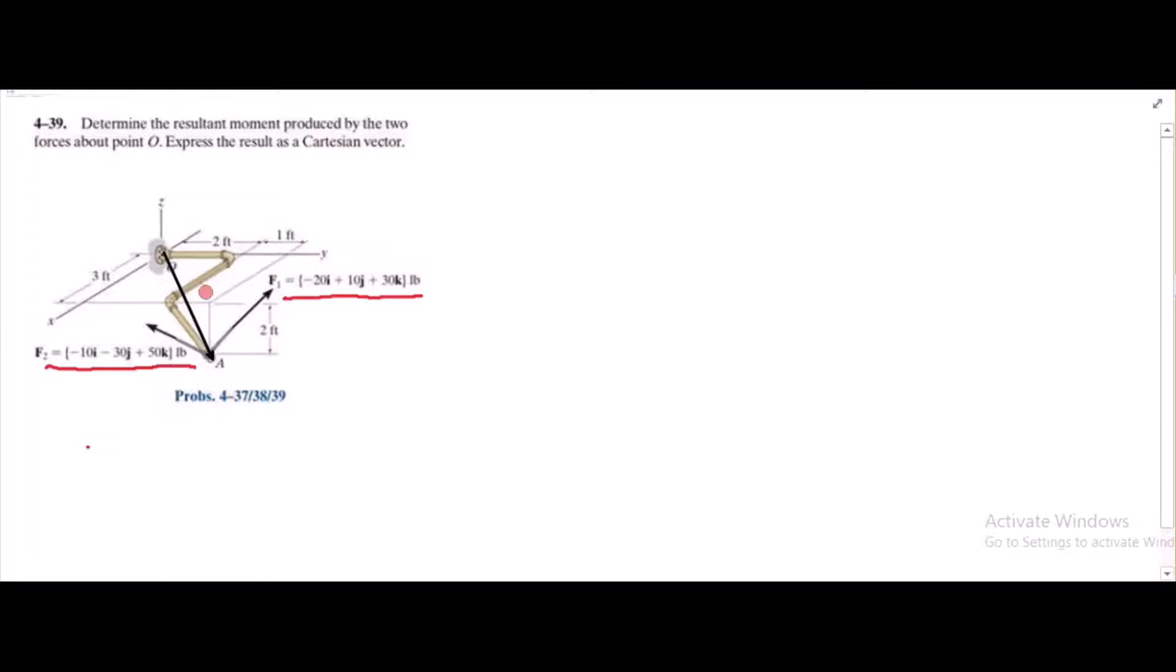Let's call this ROA. Now to find the position vector ROA or the moment arm, we have to determine the coordinates of point O and point A. So for the coordinates, coordinates of point O are (0,0,0) feet and the coordinates of point A are